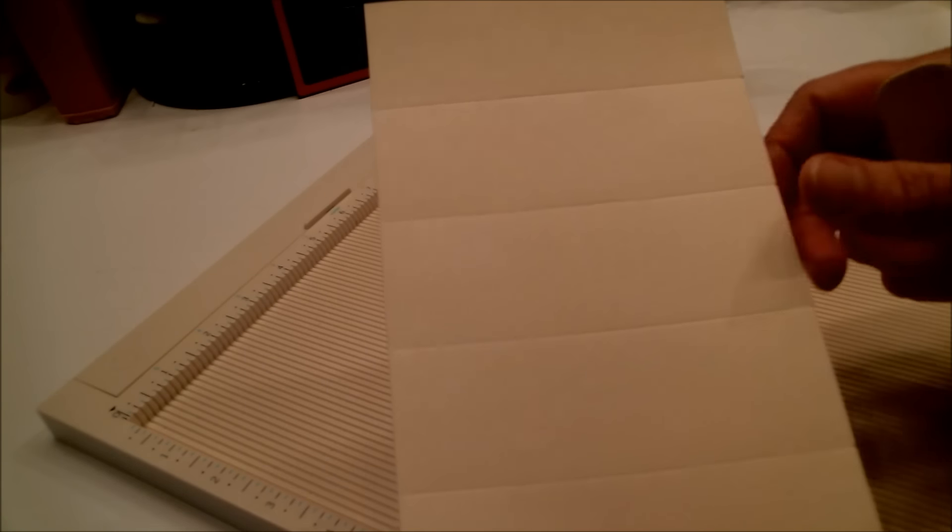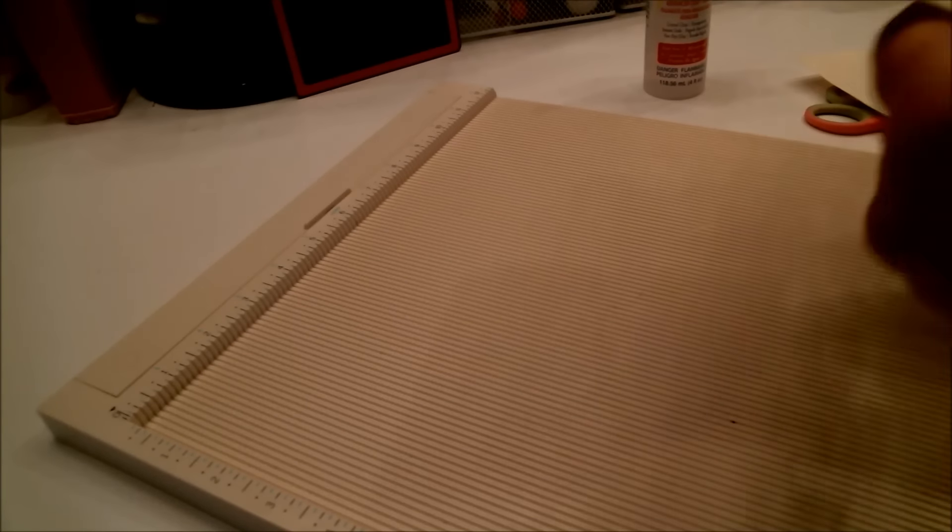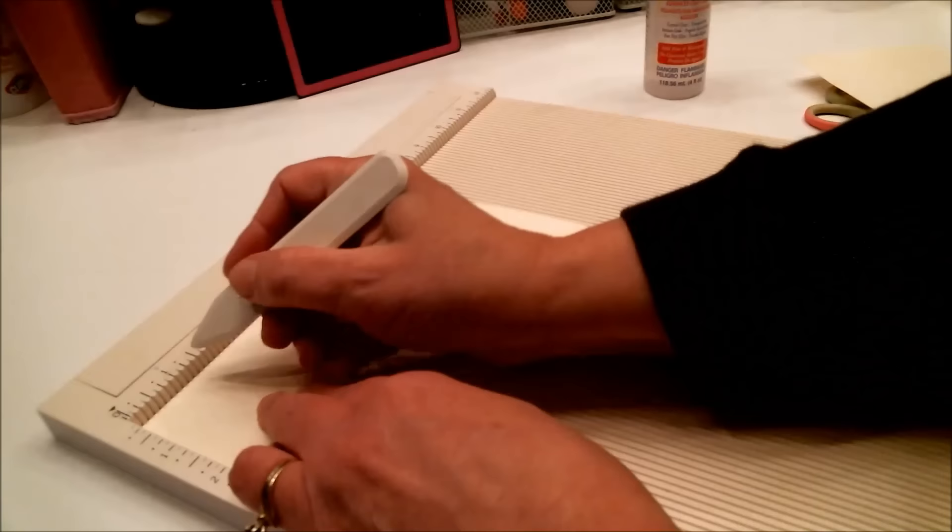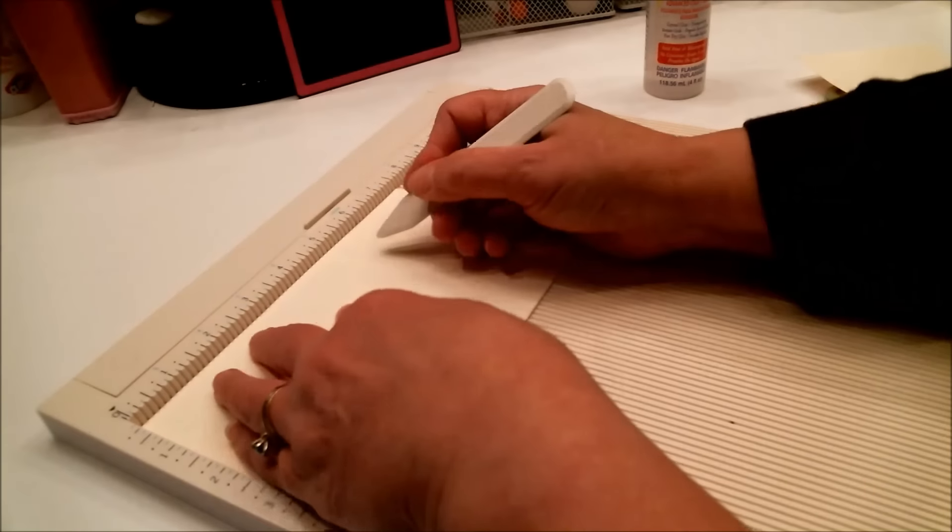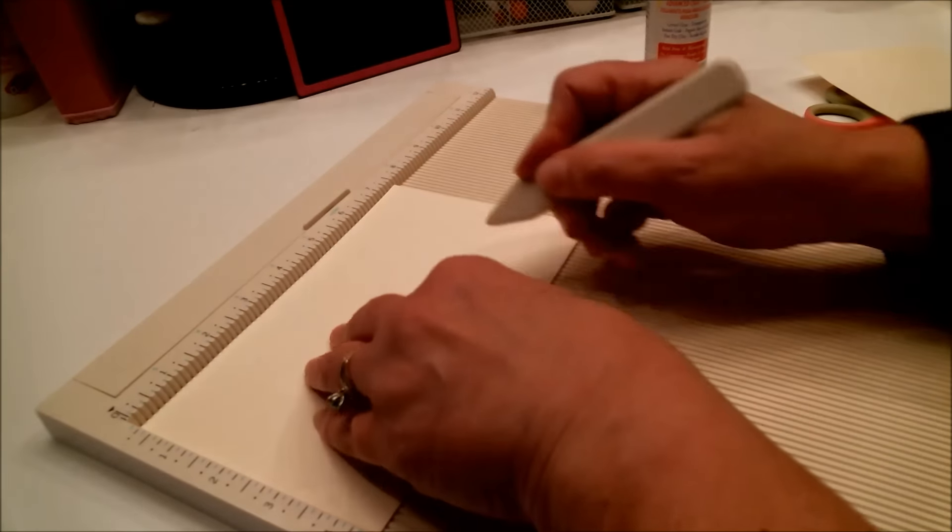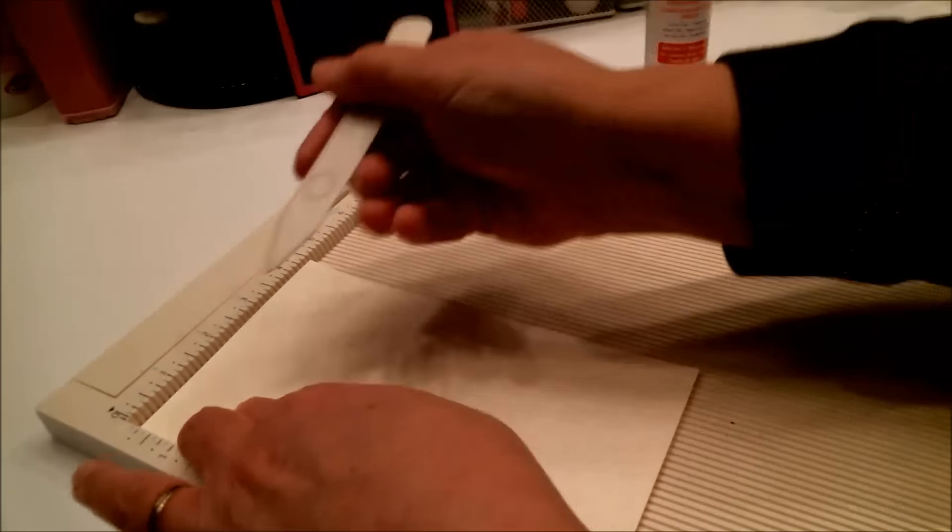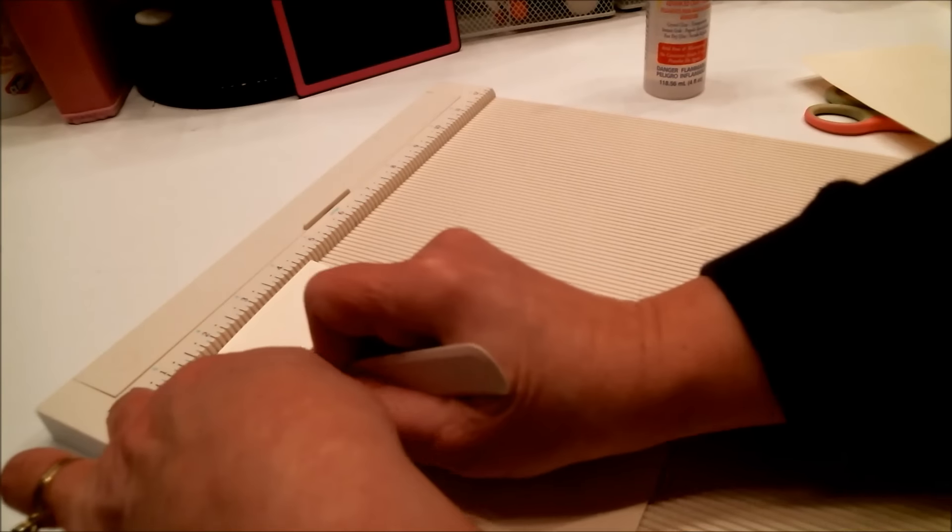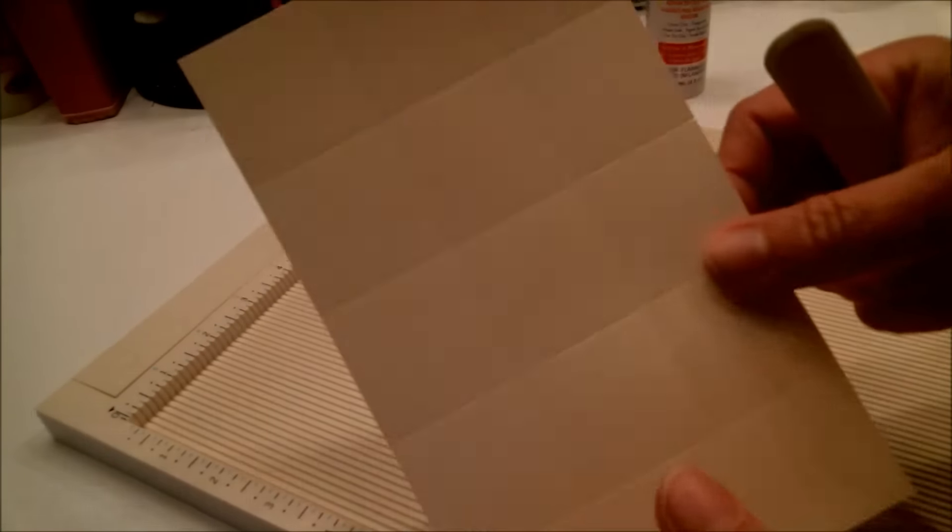We're going to do this to both pieces of cardstock. So again, one and a half inches, three inches, four and a half inches, and six inches. Turn it and score it one and a half and at three. Okay, so far so good. I'm done with my scoreboard, I'll move that out of the way. Now we're going to get to the cutting.